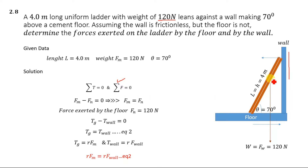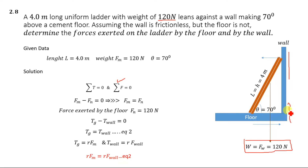There are four forces acting on this ladder. The first force acting downward is the weight, given as 120 Newton. This weight is balanced by the normal force acting upward. The third force is the frictional force acting in the x-direction, and this friction is balanced by the force from the wall acting in the negative x-direction.